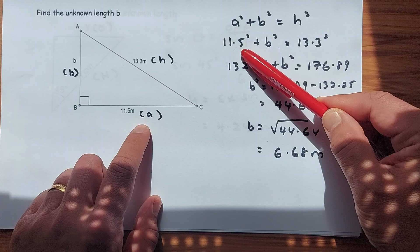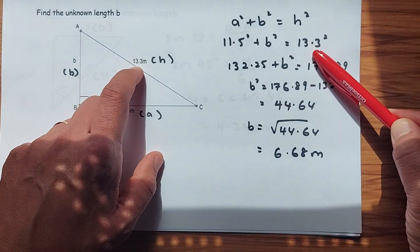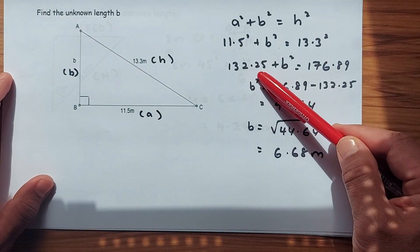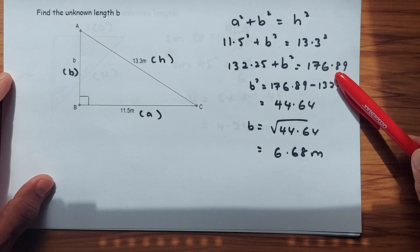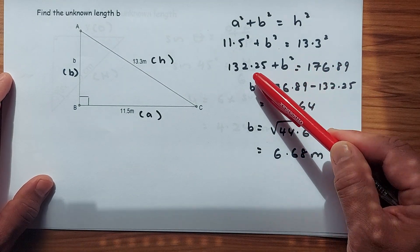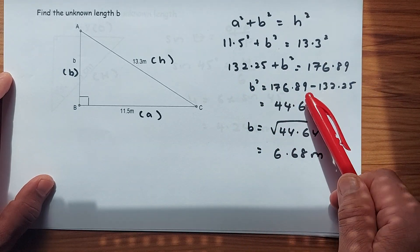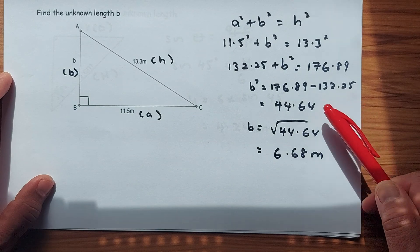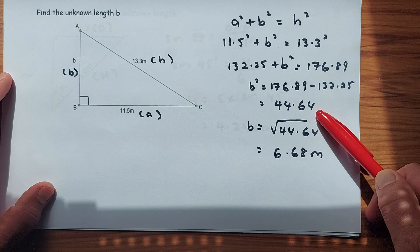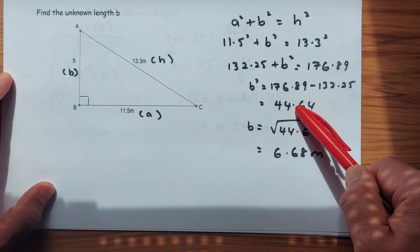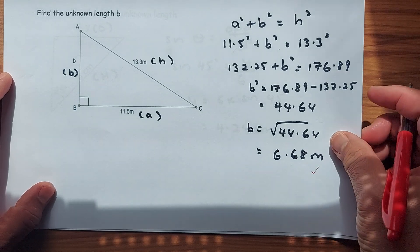Substitute: A is replaced by 11.5 squared, B remains as B squared, and H is 13.3. Calculate: 11.5 squared is 132.25, and 13.3 squared is 176.89. Rearranging, B squared equals 176.89 minus 132.25, which gives 44.64. Taking the square root gives B equals 6.68. That earns you another mark in the exam.